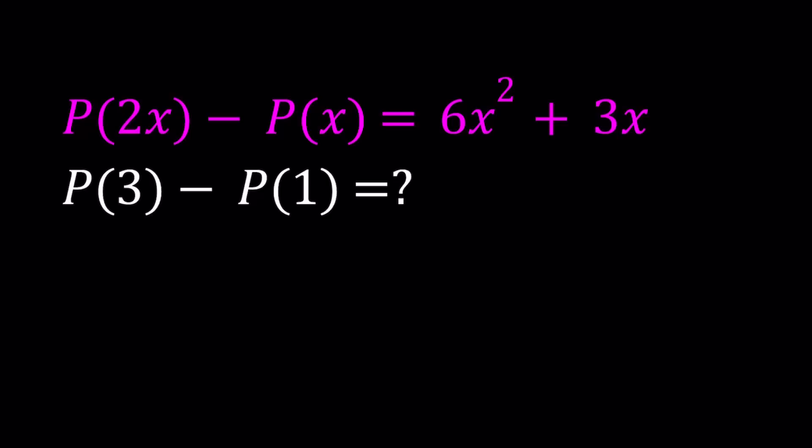If I just substitute X with something, suppose X is equal to 1. If X is equal to 1, then I should be getting something like P of 2 minus P of 1 is equal to 6 plus 3, which is equal to 9. So that doesn't quite give me what I need. I get the P of 1, but I don't get the P of 3. Can we just continue to substitute to get that? I don't think so. So here's what we're supposed to do.